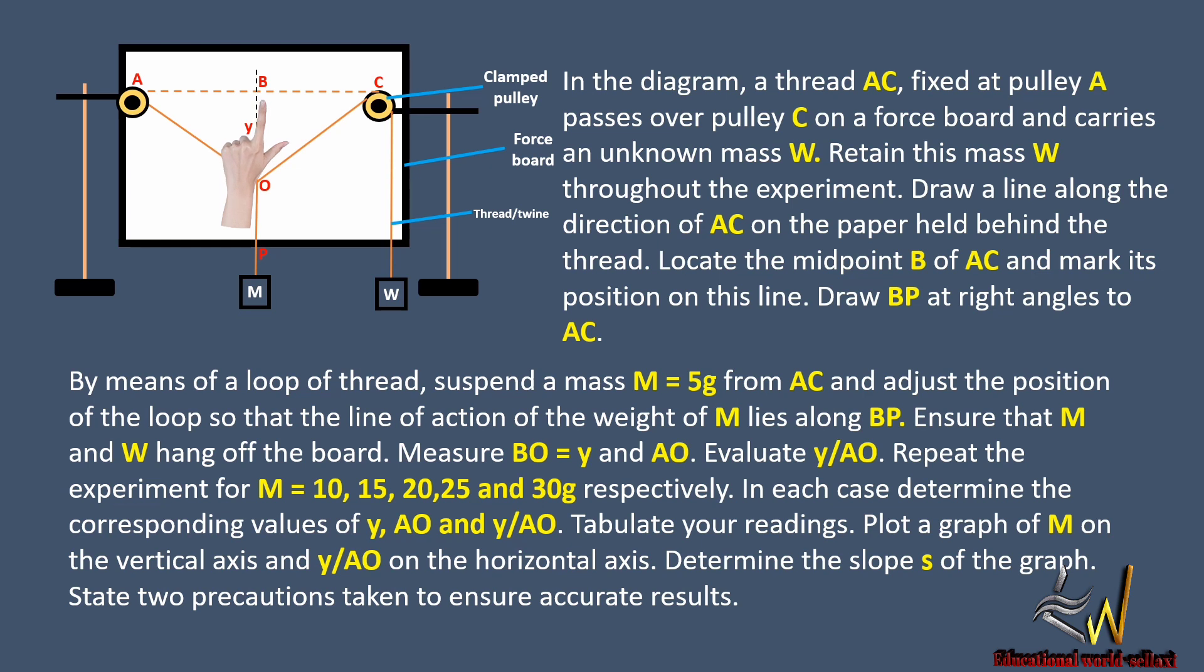Locate the midpoint B of AC and mark its position on this line. Draw BP at right angles to AC. By means of a loop of thread, suspend a mass M equal to 5 grams from AC and adjust the position of the loop so that the line of action of the weight of M lies along BP. Ensure that M and W hang off the board.